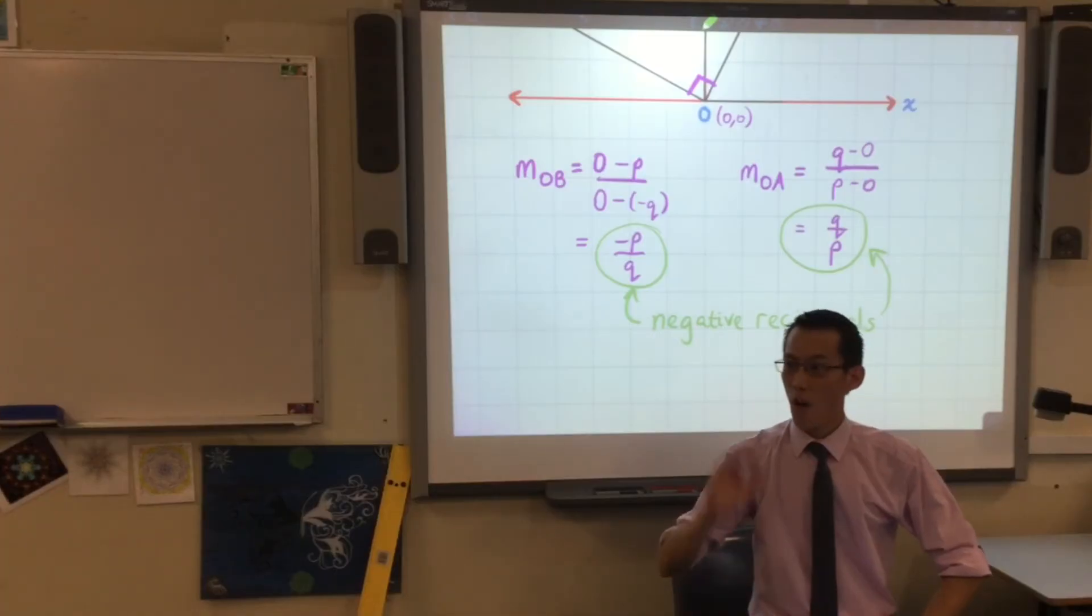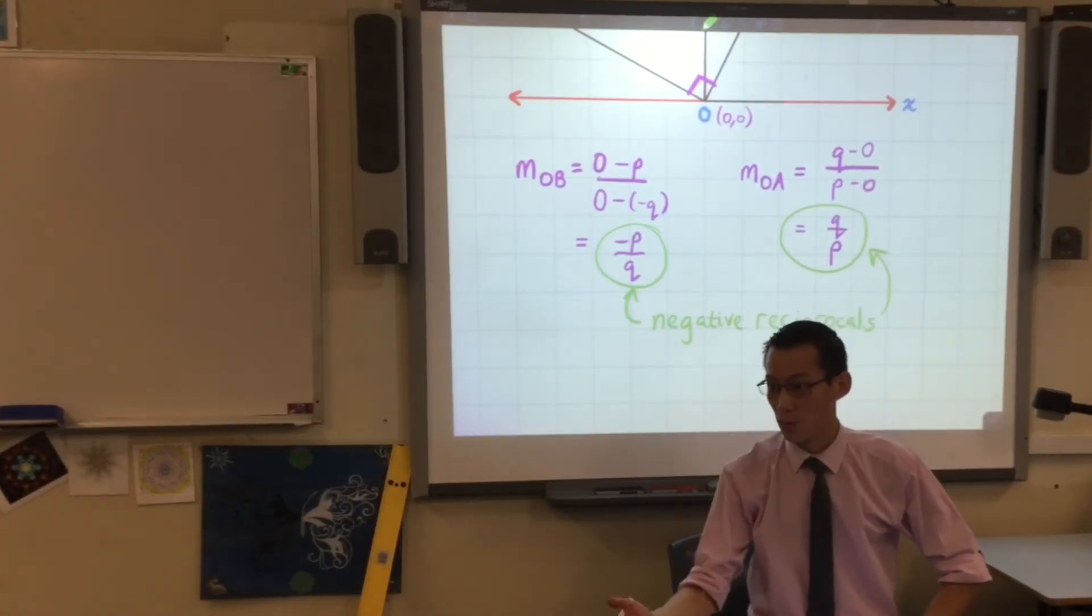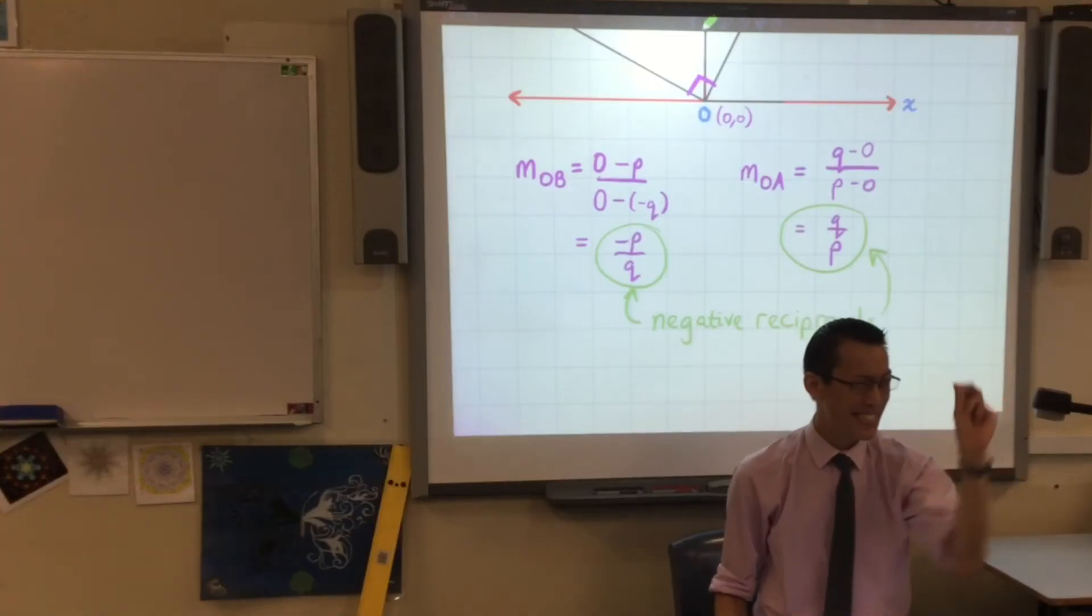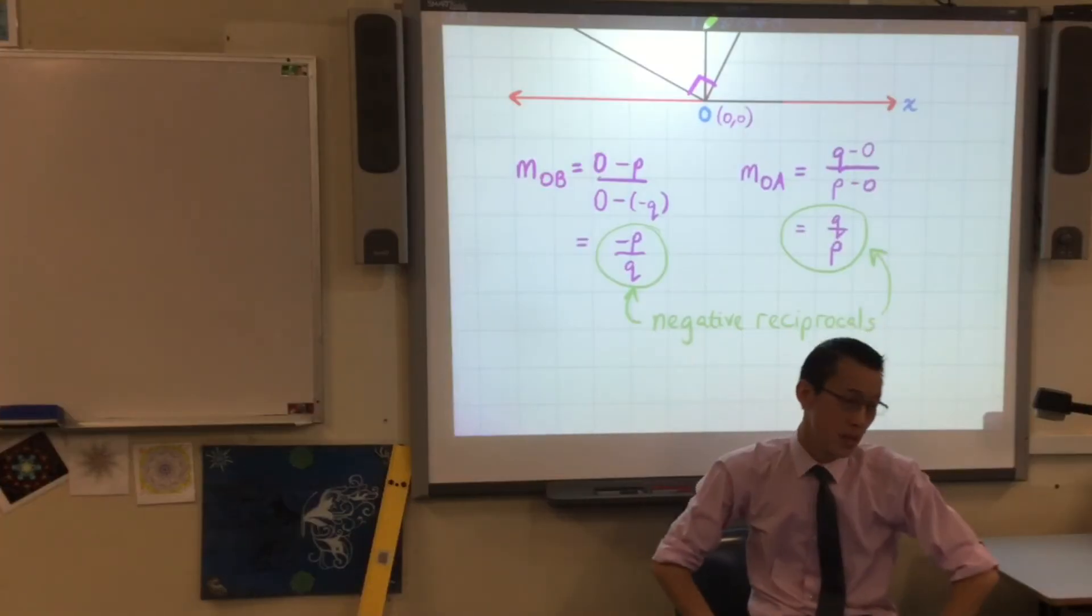When lines are parallel, their gradients are equal. When lines are perpendicular, their gradients are not equal. Their gradients are negative reciprocals.